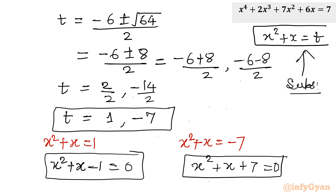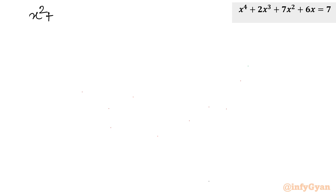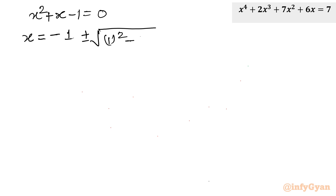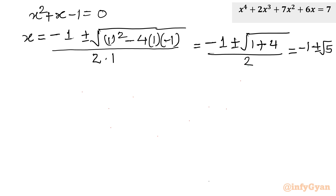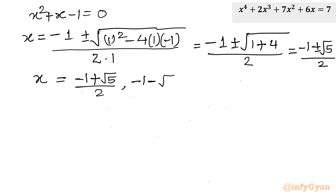We will solve both equations using the quadratic formula (Shridharacharya formula). For x² + x minus 1 equal to 0: x equals minus 1 plus or minus square root of b² minus 4ac, which is 1 plus 4, divided by 2. So x equals minus 1 plus or minus square root of 5, all over 2. There are two real solutions: minus 1 plus √5 over 2, and minus 1 minus √5 over 2.